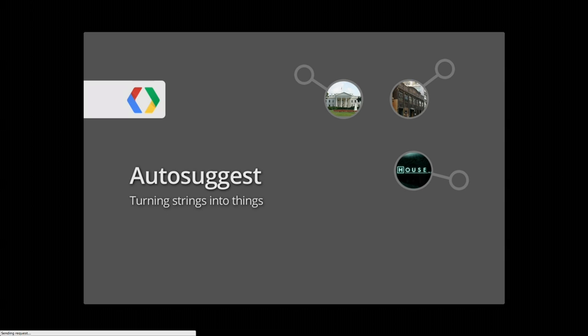The first example is AutoSuggest. This has been really important to Freebase from the beginning — it's the ability to turn strings into things. We take ambiguous keywords, in this case 'house,' and you don't know if we're talking about the TV show, the music genre, or maybe the White House. The Freebase Suggest widget lets you disambiguate those entities and turn it into one of those unique identifiers for a node in the graph. Once you have that unique identifier, you'll see all the cool stuff you can do with it.